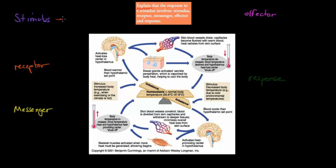Remember, a stimulus is just a change in the environment. The obvious example is thermoregulation. If the temperature is meant to be 37 degrees Celsius — that's our set point, what we want to keep — if it goes up or down, that would be our stimulus. A change in the environment would be a stimulus.